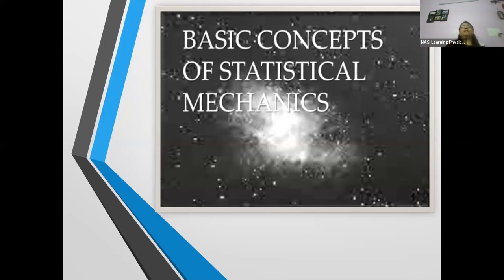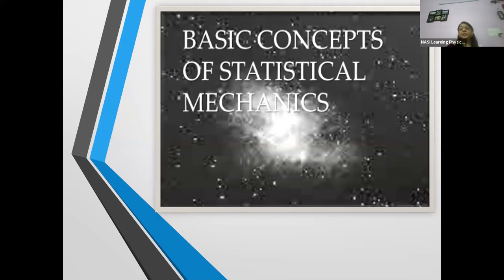One important point: where does the small h come from in statistical mechanics if we are not talking about radiation? Is the small h used in statistical mechanics always Planck's constant? The answer is that in classical statistical mechanics, the small h used to define the phase space volume is NOT Planck's constant. In classical statistical mechanics, the small h alphabet used to define the phase space volume is not the Planck's constant we know.